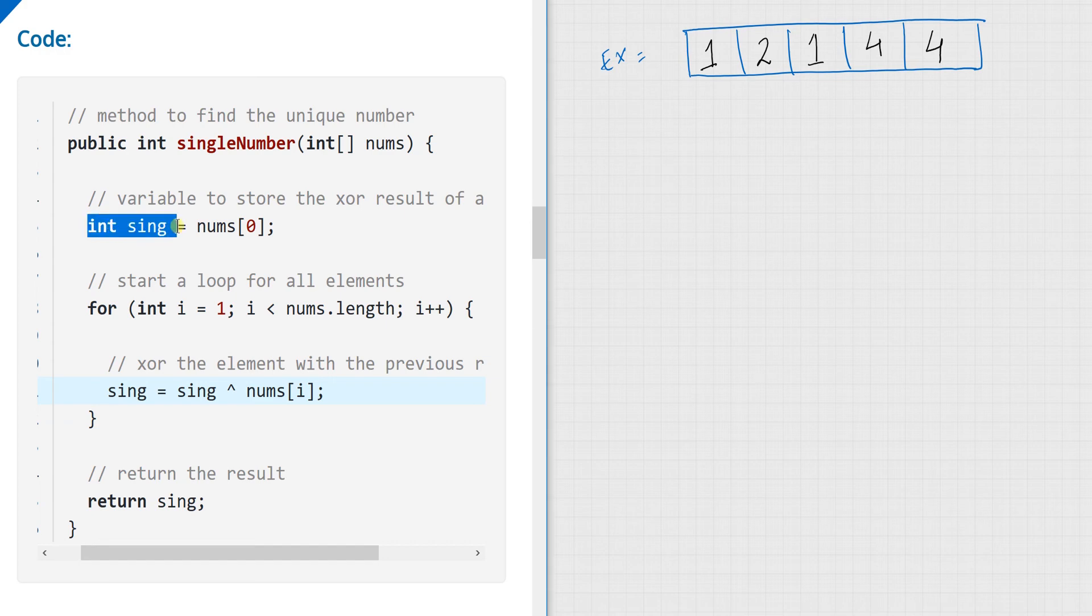So I am writing a function, and in this function I assign this variable sing, that is for single, and it would store a result. So right now I just randomly allocate it to the first element of the array, and that is 1.